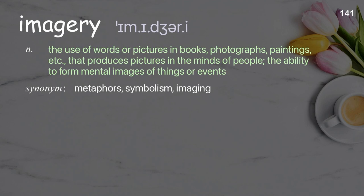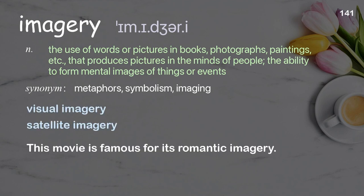Imagery: the use of words or pictures in books, photographs, paintings, etc., that produces pictures in the minds of people; the ability to form mental images of things or events. Examples: visual imagery, satellite imagery. This movie is famous for its romantic imagery.